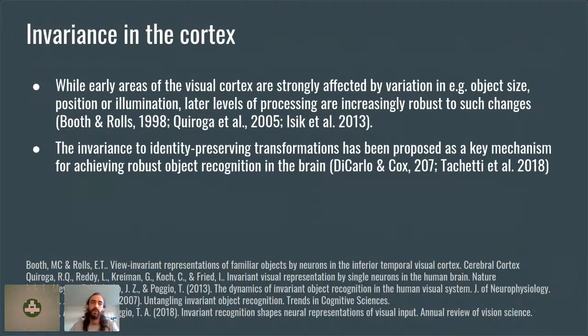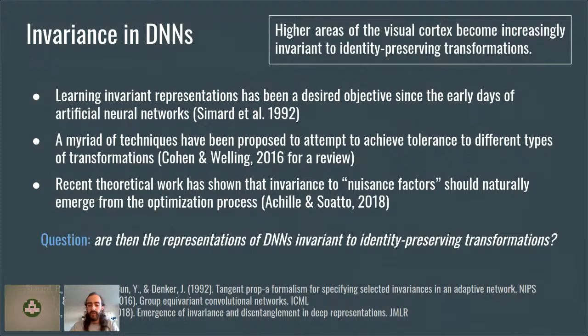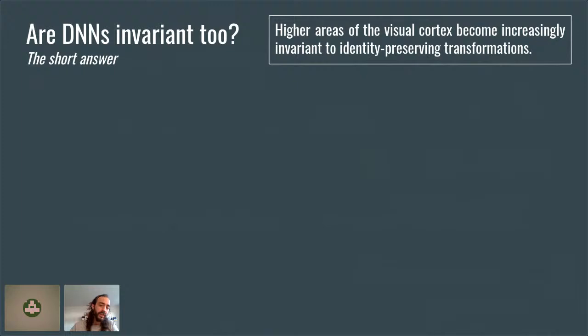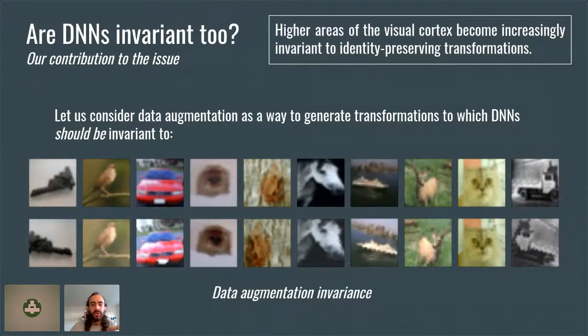When we come to deep neural networks, many people have proposed techniques to incorporate invariants to certain transformations in DNNs, both practically and theoretically. But are the representations of DNNs really invariant to identity-preserving transformations? The short answer is no. We could think of adversarial examples as a case where visual perception is completely broken. My contribution has been to consider data augmentation as a way to generate the transformations to which a DNN should be invariant. I took a very simple approach: given two images — for example this car on the dock — we can compute the dissimilarity at any layer of the network using the mean square difference of internal representations.